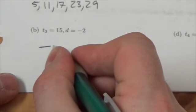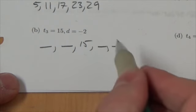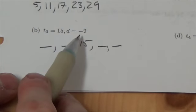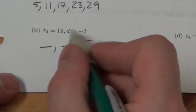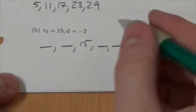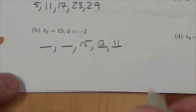So what we've got here is blank, blank, 15, comma, blank, blank. Now our common difference here is negative two. So to go from 15 to the next two terms, I am simply going to add negative two. So this will end up being 13 and then 11. Basically I'm going to subtract two, subtract two.